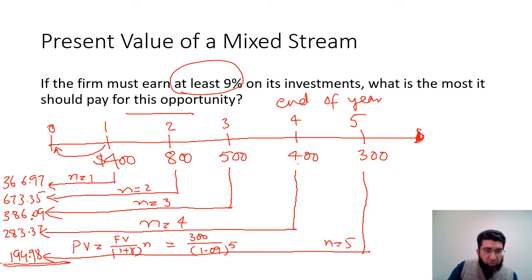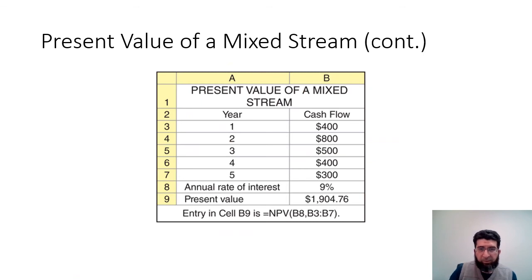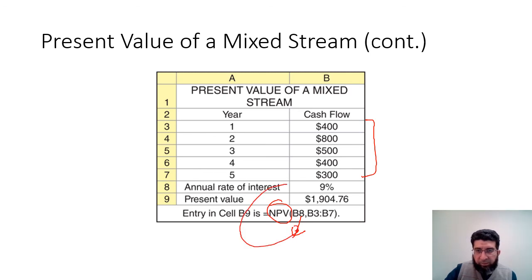Adding all the discounted cash flows together gives a total present value of $1,904.76. In Excel, you simply use the NPV function with the interest rate and cash flows listed in cells B3 to B7, and you get the same result of $1,904.76.